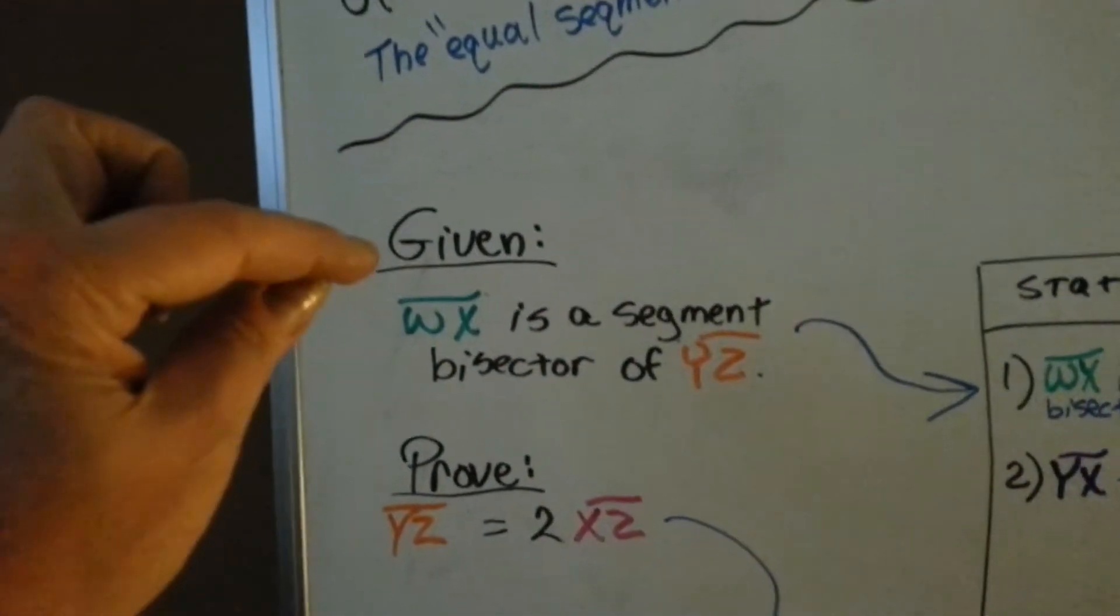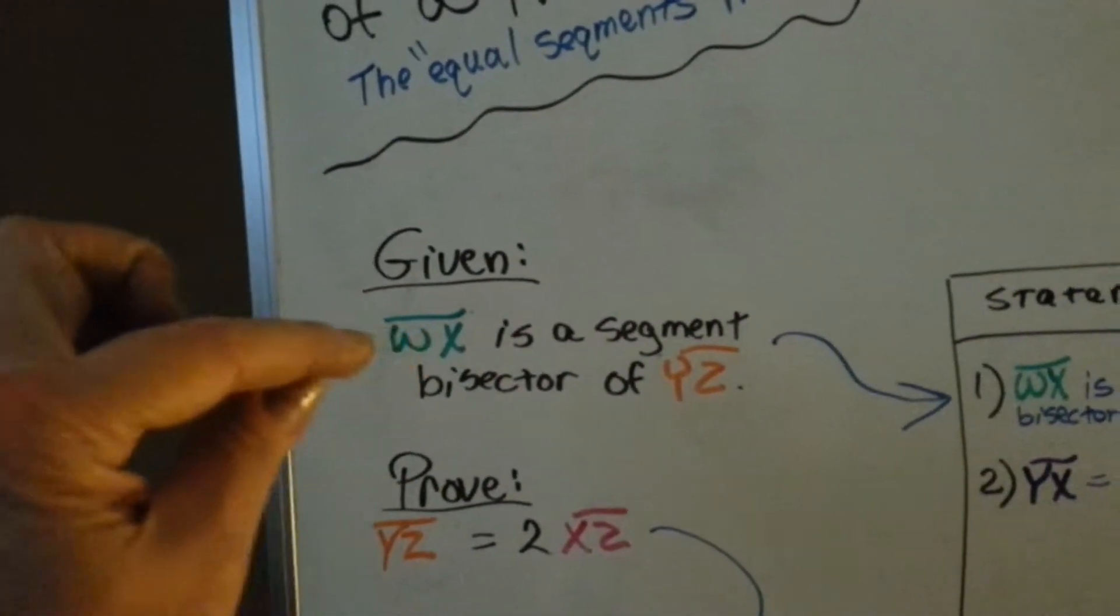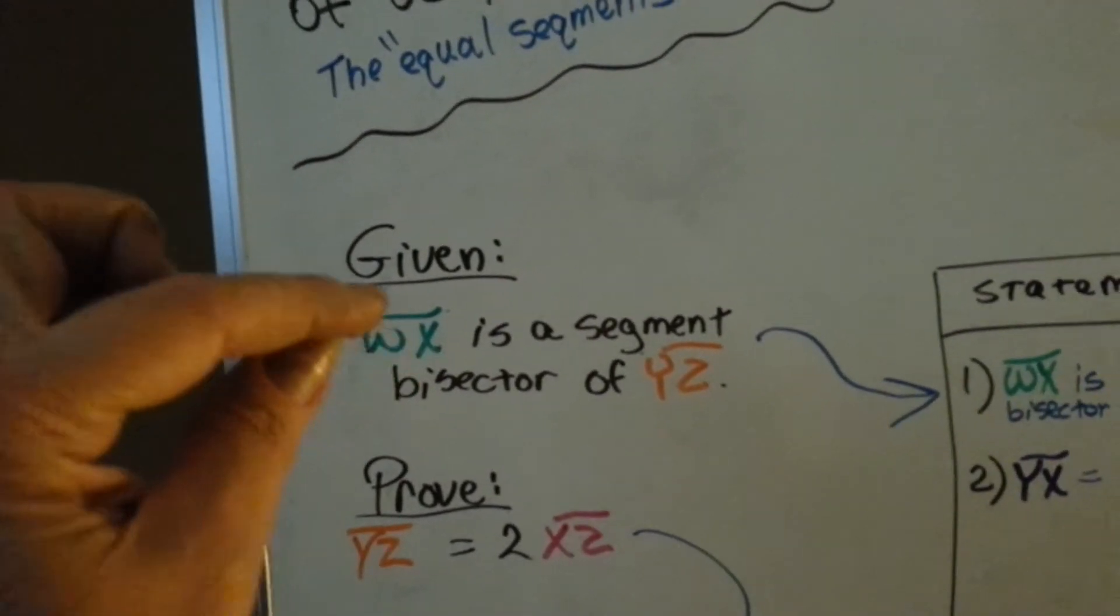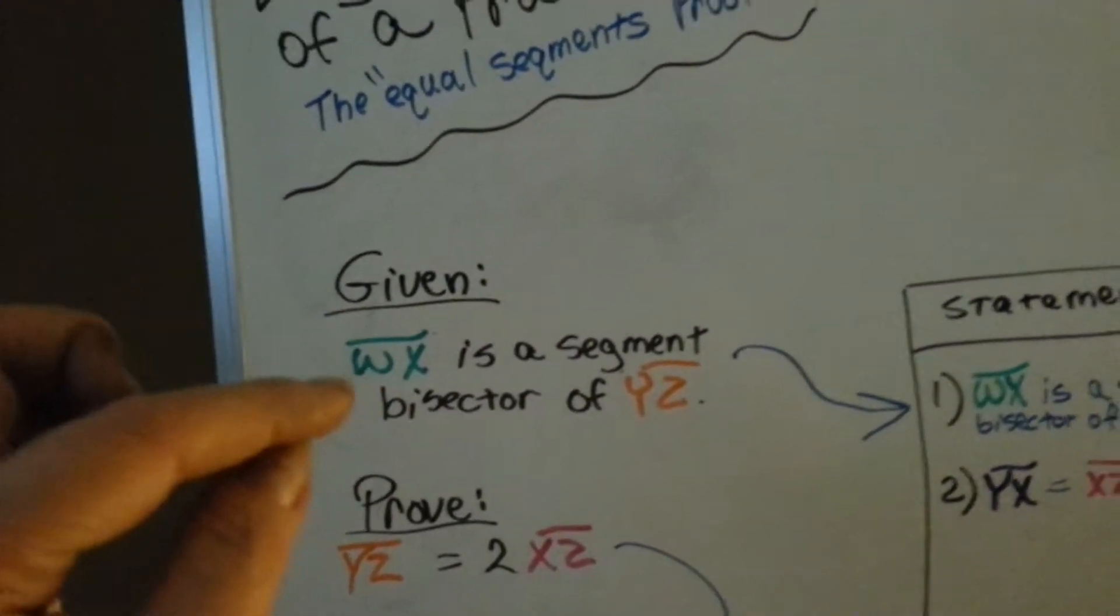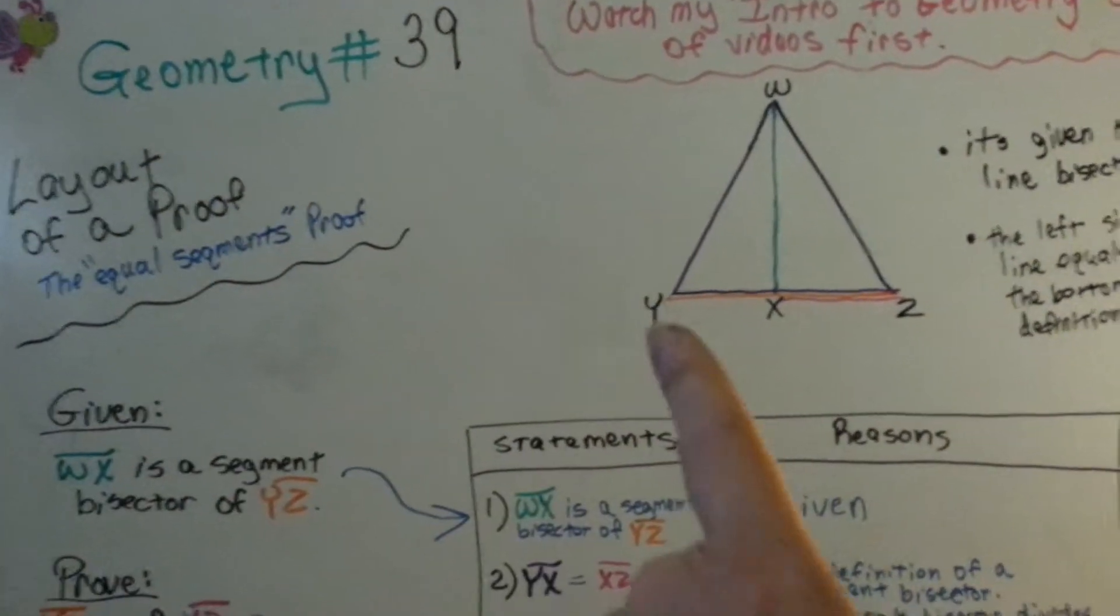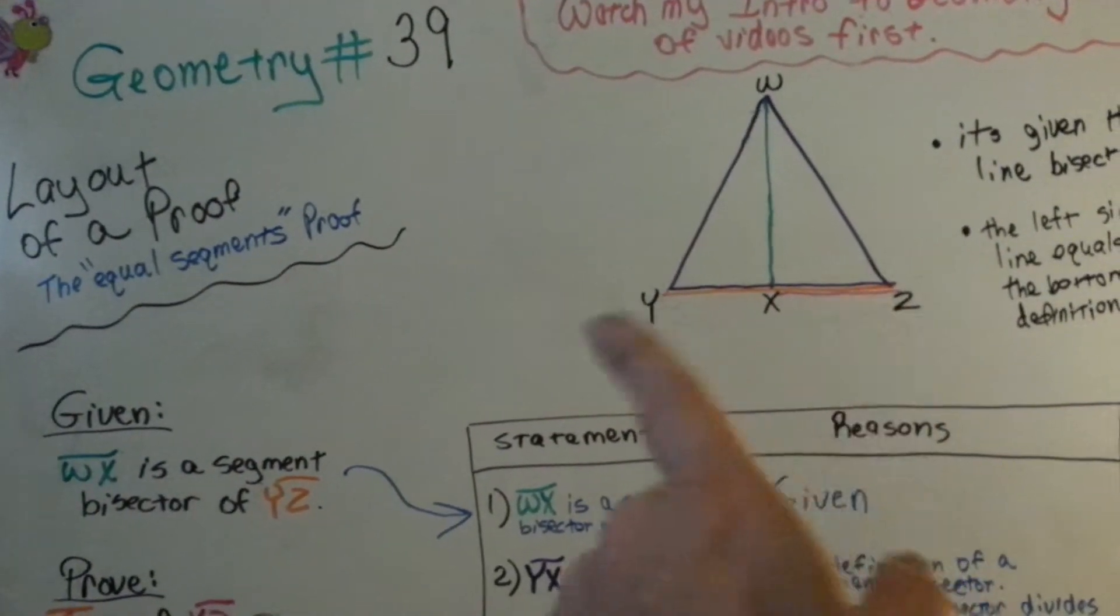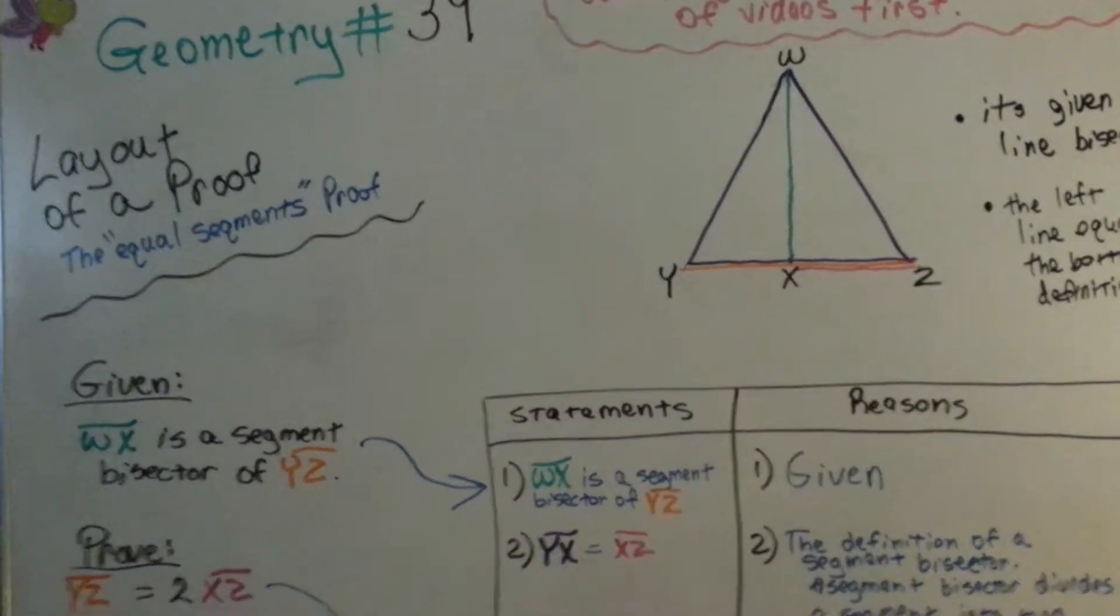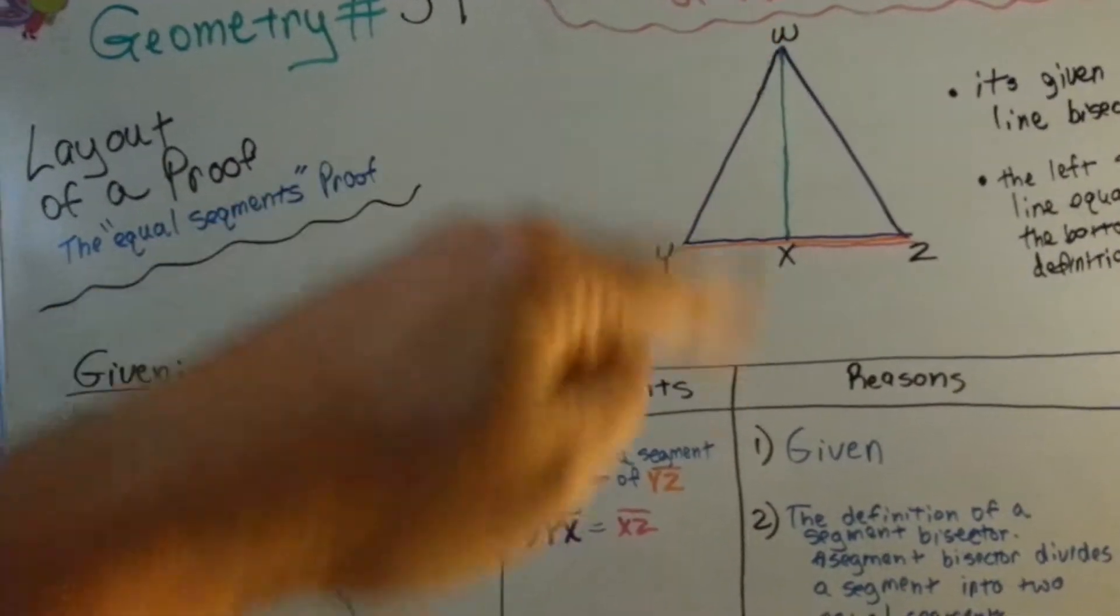Here's our given statement: segment wx is a segment bisector of yz. Green wx is a segment bisector of yz. Looks like it is - it cuts right down the middle there.